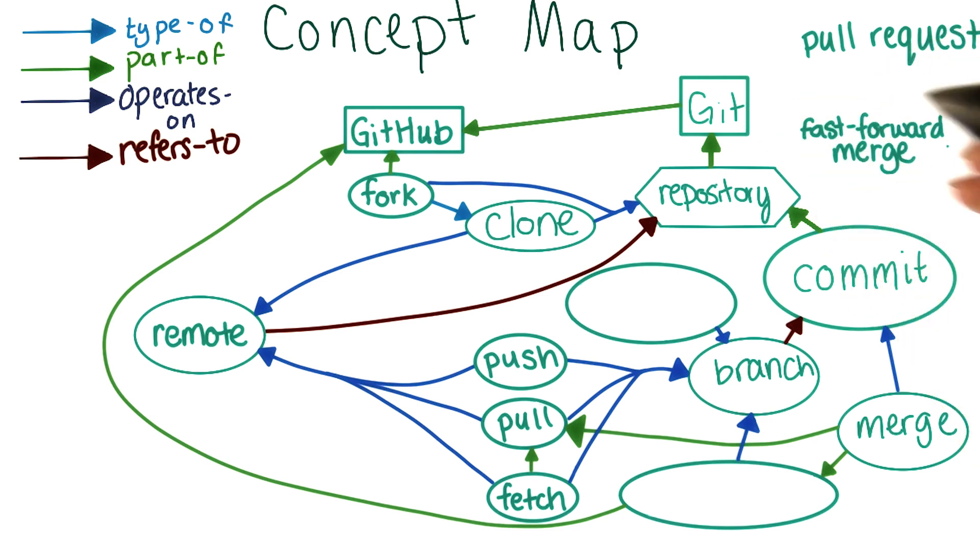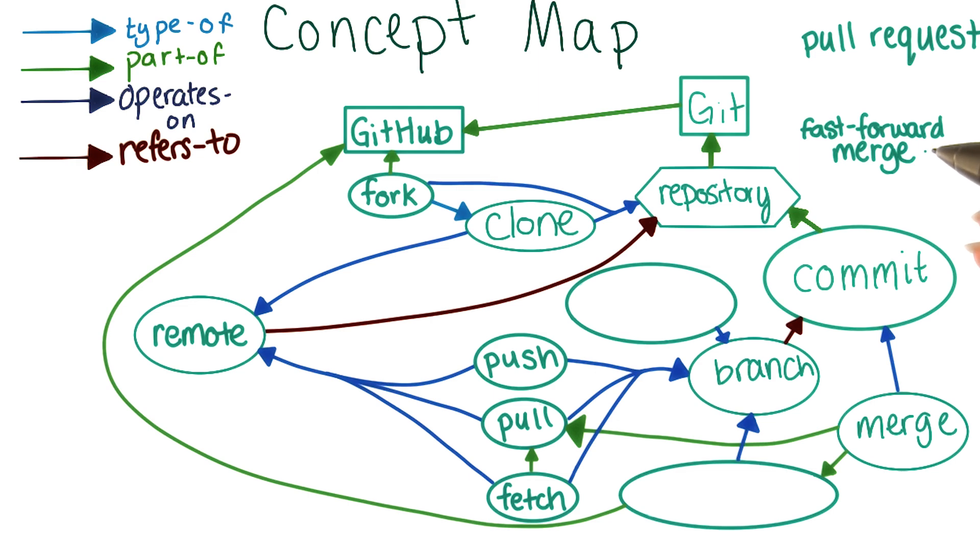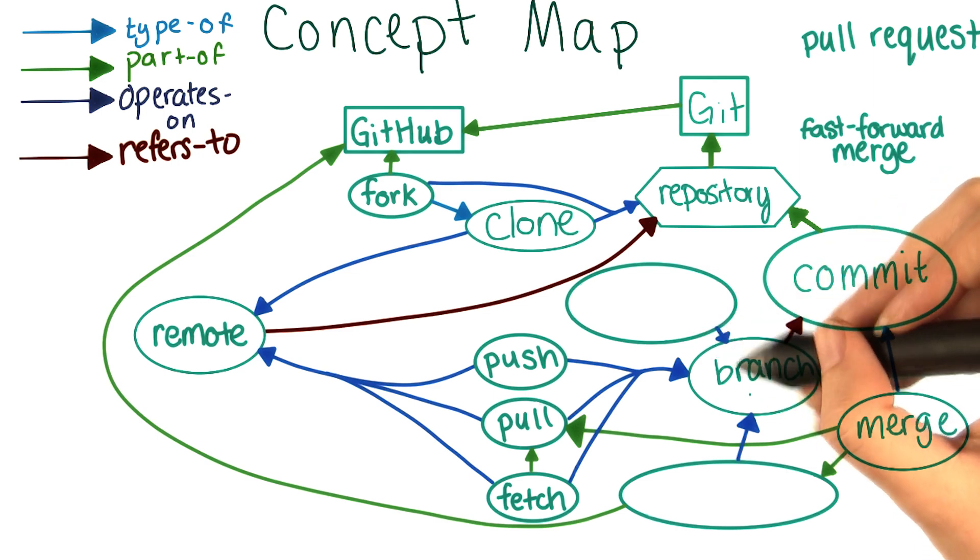Now it might be tempting to put fast forward merge here. Since you would think fast forward merge would be related to merges. But the way that I think about fast forward merges is basically that they change where a branch points. So it takes a branch label from one commit to another commit. So in my mind, it just operates on a branch.